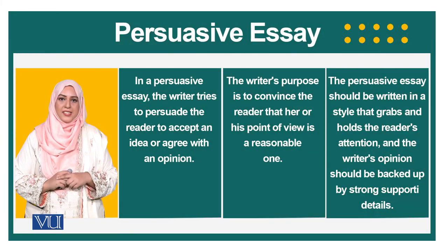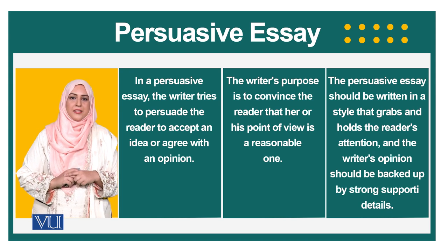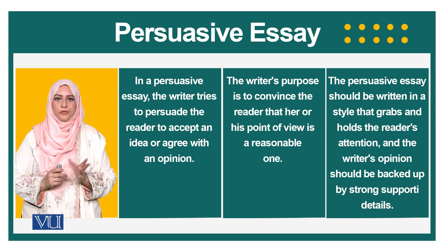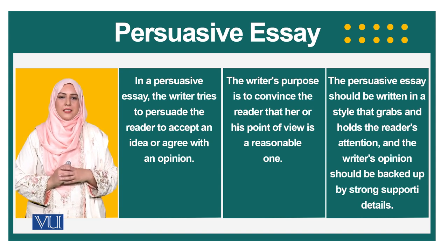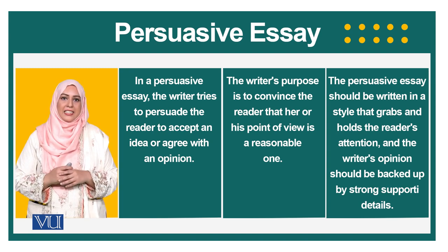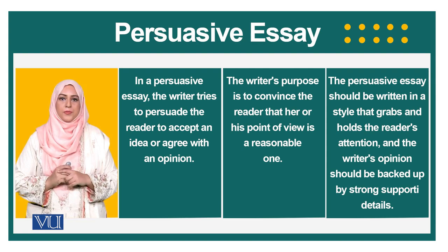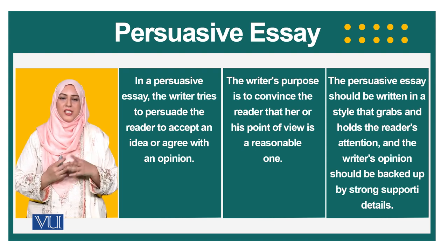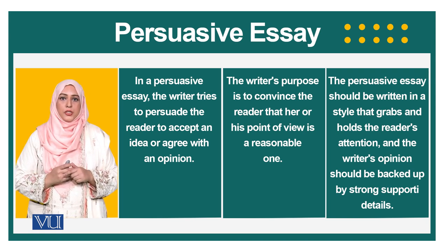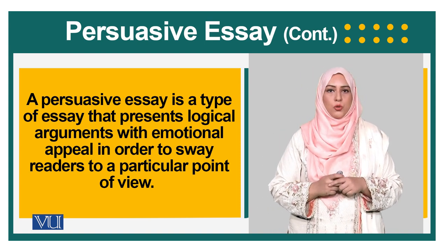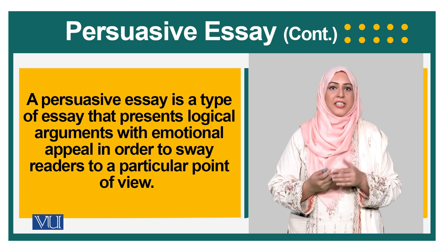The fourth type of essay is the persuasive essay. In this essay, the writer wants to persuade the reader either to accept an idea or to agree with a certain point of view. The aim is for the writer to convince the reader that whatever the writer is stating — his idea, his point of view — is the reasonable one. When writing a persuasive essay, you need to use striking word choices to hook your reader's attention and back your opinion with evidence and analysis. A persuasive essay provides a logical argument with emotional appeal to sway the reader to agree with your point of view.